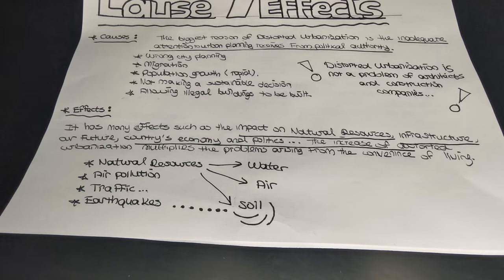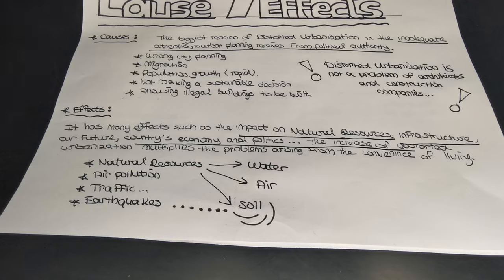Let's talk about the effects of distorted urbanization. We can see that distorted urbanization has many effects, such as the impact on natural resources, infrastructure, our future, and the country's economy and politics in a bad way. It affects ease of life. The biggest effect of distorted urbanization is on natural resources: the consumption of water resources increases while our water resources decrease. The requirement of water increases and that leads to a decrease in water resources.